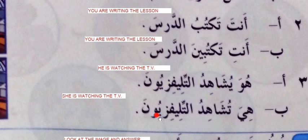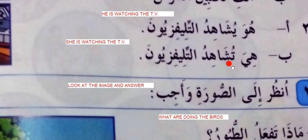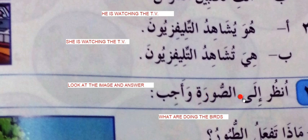Number three: huwa yushahidu al-television — he is watching the TV. Hiya tushahidu al-television — she is watching the TV. Huwa is masculine, so ya-; hiya is feminine, so ta-. By now you have learned well where to use ya- and where to use ta-. Write the correct answer where appropriate.